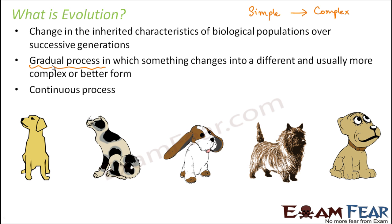Evolution is a continuous process — it doesn't stop. It started long, long ago and continues even today. Even though we feel that we, as Homo sapiens, have evolved from many ancestors, we ourselves are still changing. The entire species of human beings is undergoing continuous change. If you compare a human being from thousands of years from now with a person from a thousand years back, there will be a huge difference — a result of evolution. It is a slow, gradual, but continuous process where simpler things become more complex.